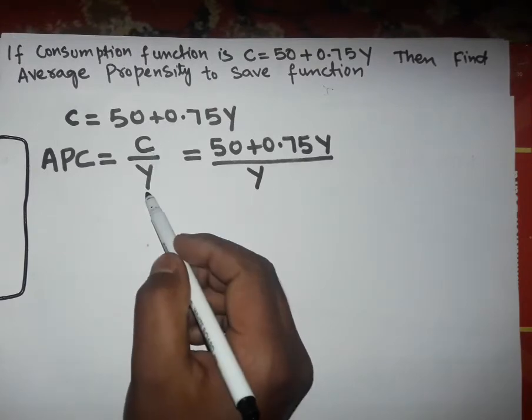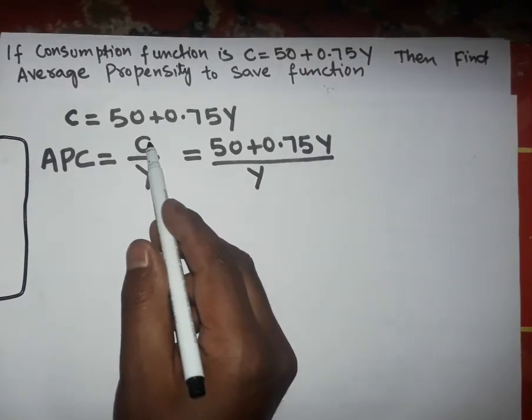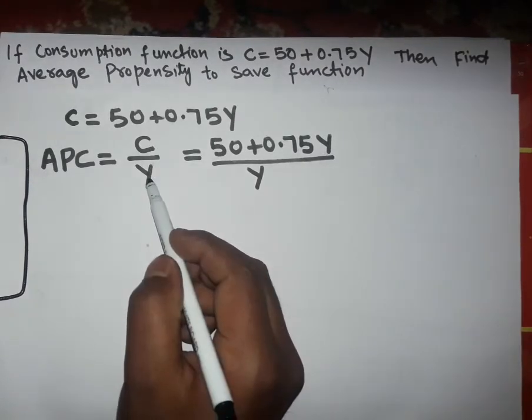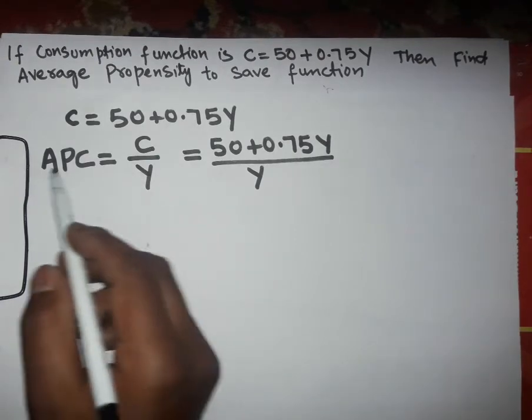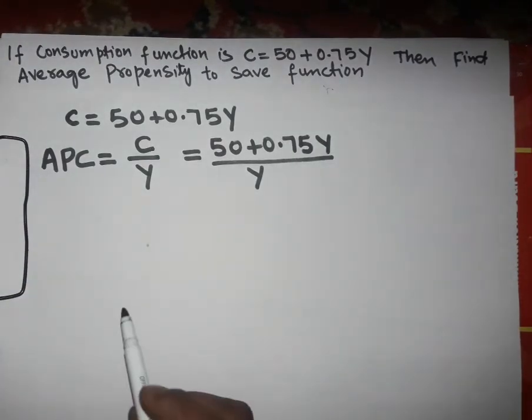So, C divided by Y. Here, C is the consumption function and Y is the income. This will give us the average propensity to consume.